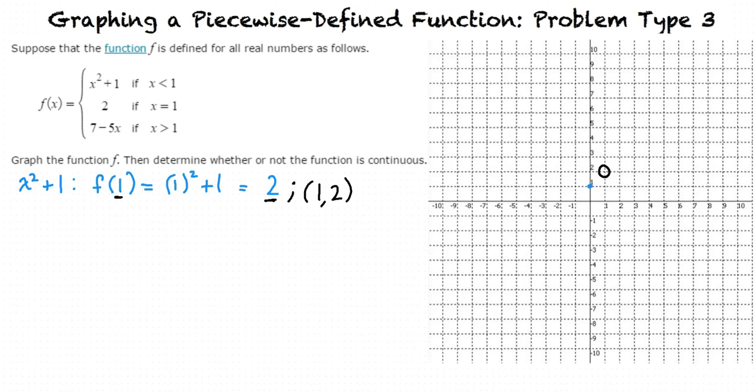Because the vertex is at x equals 0, one of the next closest points will be at x equals 1, which we already know is 1 comma 2. We can plot the next point there, and the corresponding symmetrical point to this one is negative 1 comma 2. We draw the graph from here.